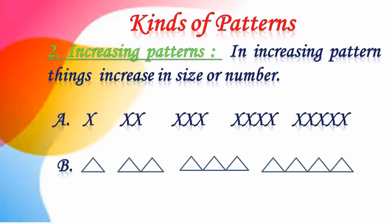Now comes the second pattern, that is increasing patterns. In an increasing pattern, things increase in size or number. It starts with X, then X increased by one and it becomes double X. In the third step, it increases by one more to three X, then four X. X is increasing — it is called an increasing pattern. The number increases one by one.